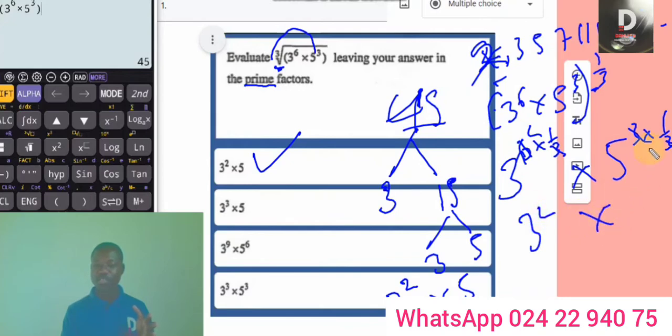Three to the power two times five to the power one. Same answer.